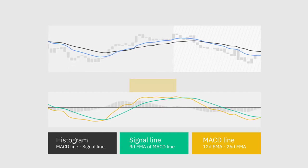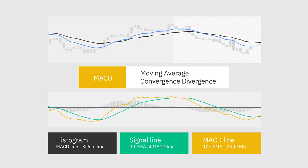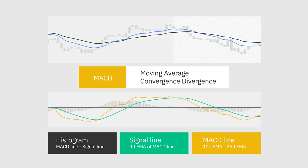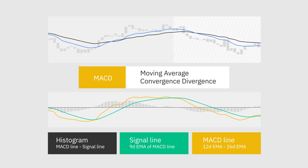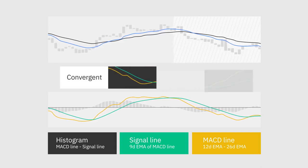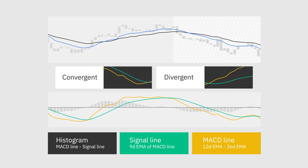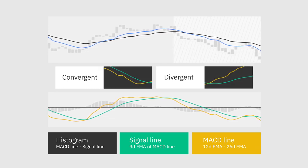As the name suggests, the Moving Average Convergence-Divergence indicator tracks the relationships between moving averages, and the correlation between the two lines can be described as either convergent or divergent — convergent when the lines gravitate toward one another, and divergent when they move apart.